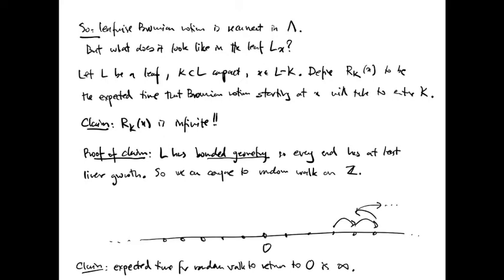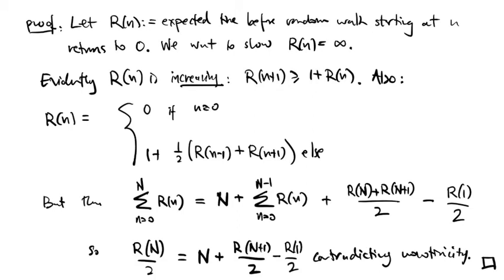If we start at some non-zero point and we run the random walk, we can ask what's the expected time before the random walk returns to the origin. As is well known, the random walk does return to the origin infinitely often. However, the expected time it takes before it returns to the origin is infinite. Here's the proof. Let r of n be the expected time before a random walk on the integers starting at the integer n returns to 0. We want to show that r n is infinite when n is positive. Evidently, r of n is increasing. r of n plus 1 is at least as big as 1 plus r n because the first step can get no closer to the origin than to move from n plus 1 to n.